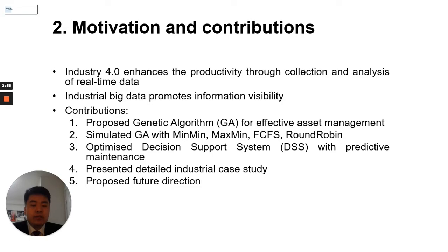What motivates this research study? Real-time collection and analysis of industrial data promotes manufacturing productivity and information visibility, which motivates this study. The contributions of this work include: a proposed genetic algorithm (GA) for asset management; a comparison of GA with different resource management techniques, namely MinMin, MaxMin, First Come First Serve, and Round Robin; an optimized decision support system with an equipment predictive maintenance model; a case study showing the proposed technique; and a proposed future direction for this work.